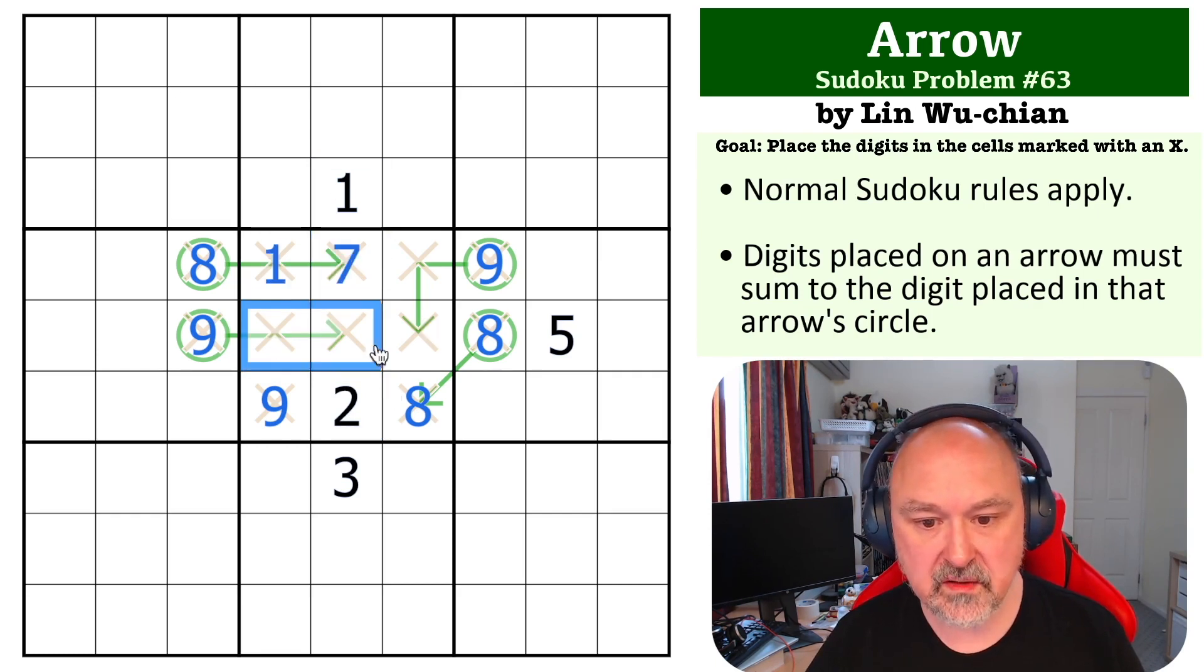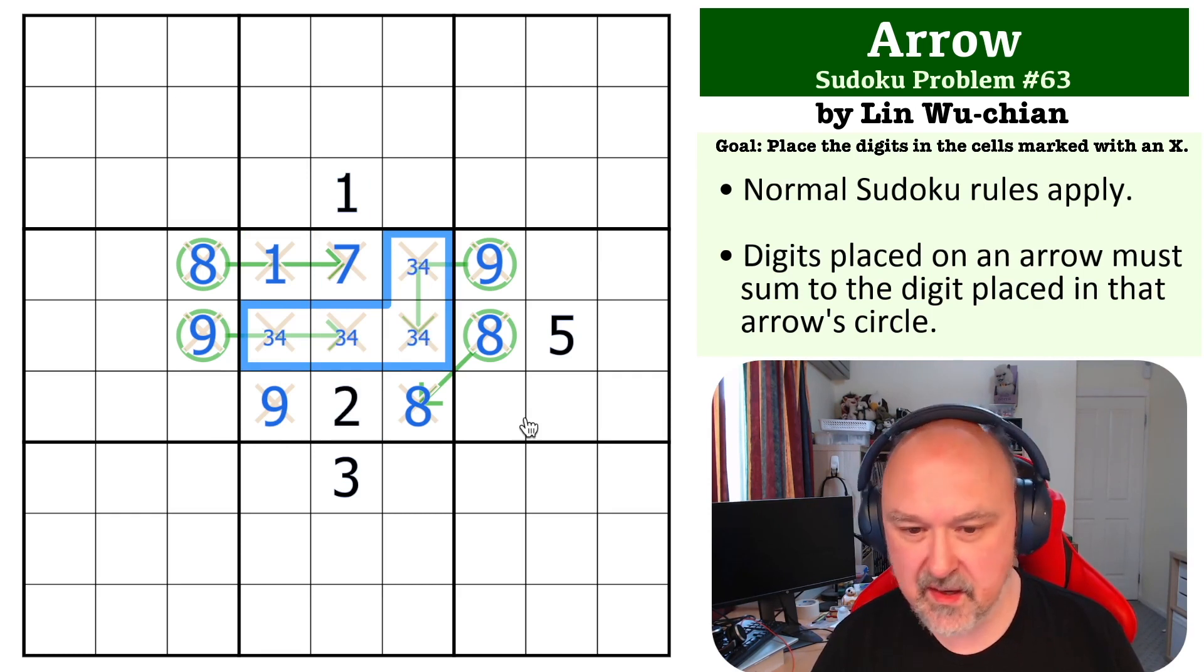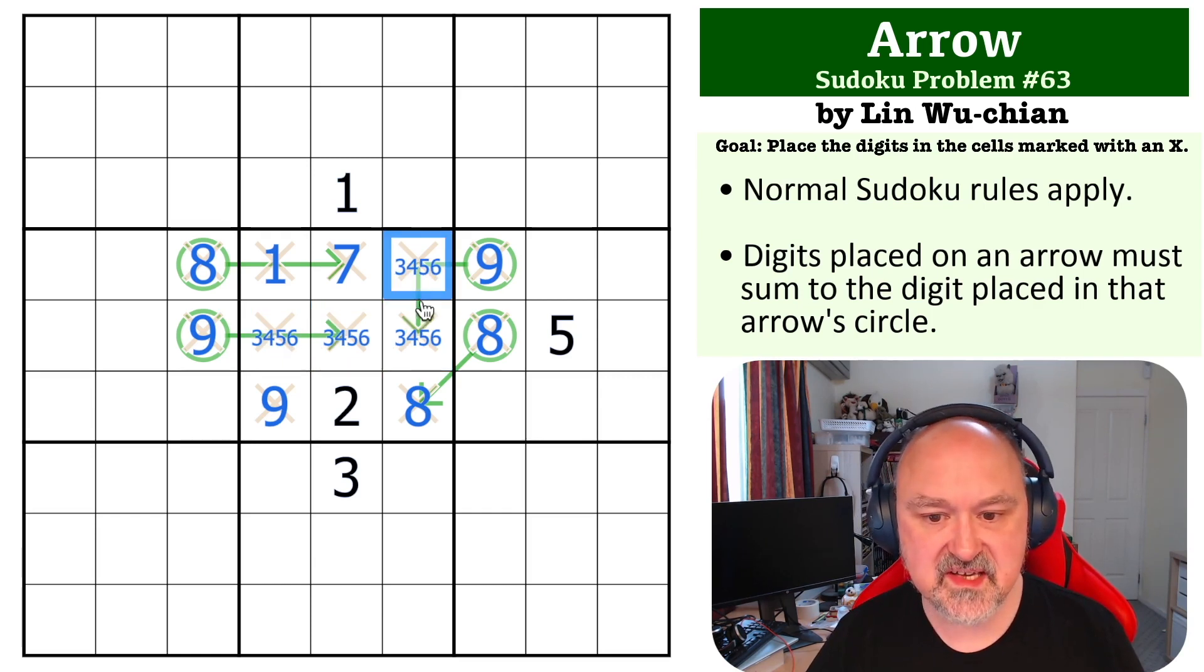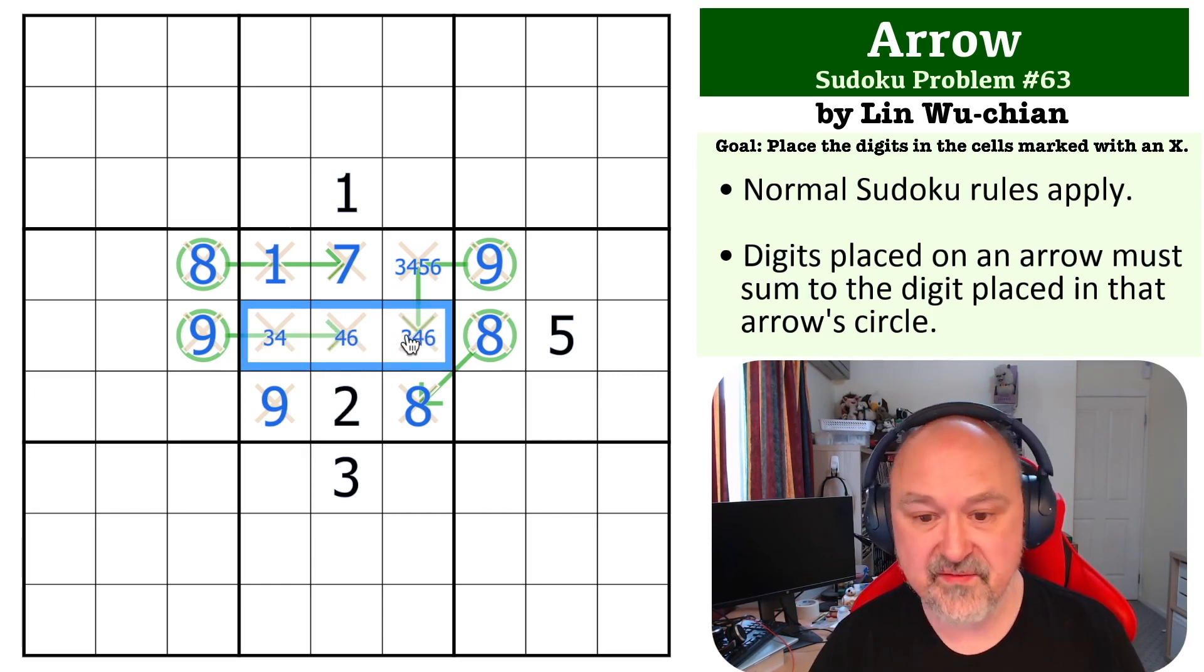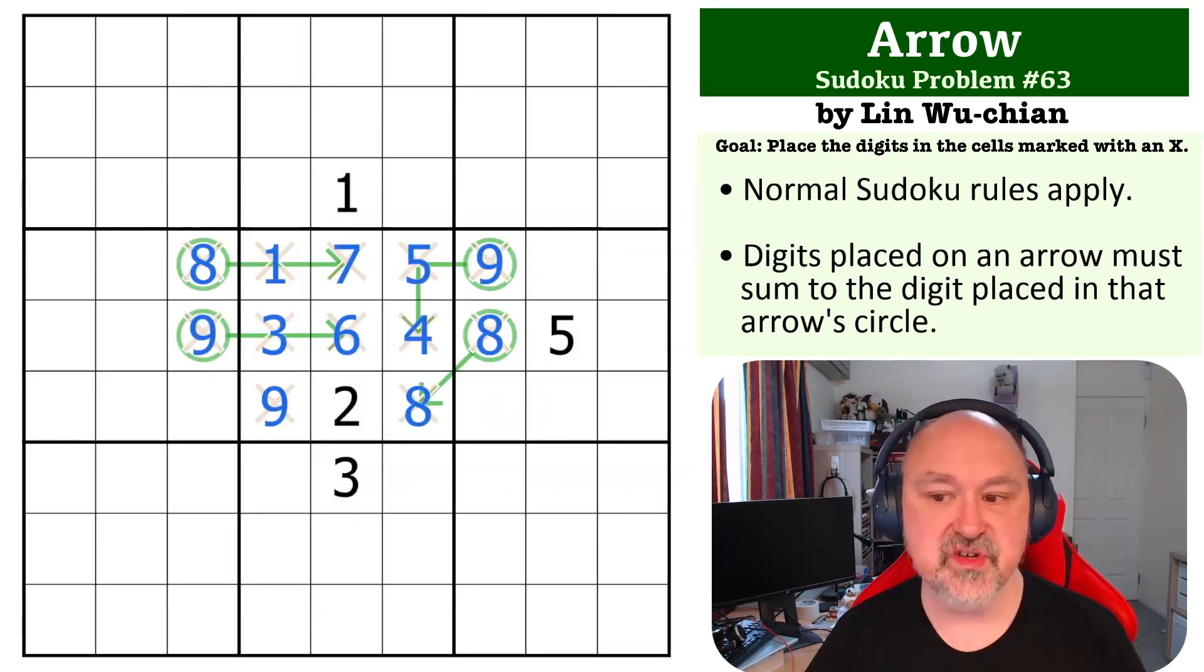The digits that are left are three, four, five, and six. Three and six sum to nine, four and five sum to nine. This can't be three, so this can't be six. I can't put five in here at all, so this is the five which means this is the four. There's no four in here, so this is the three and this is the six. That's the solution to the problem.